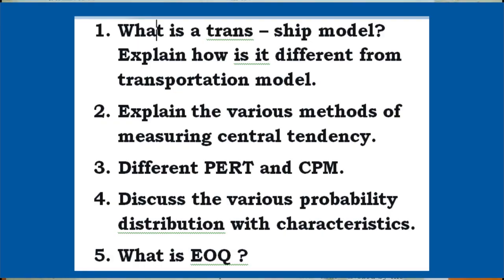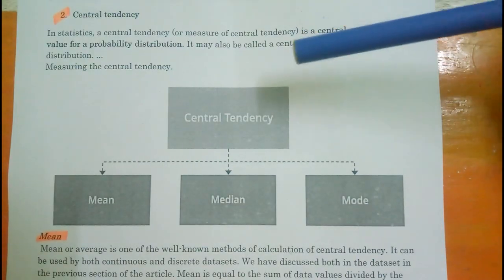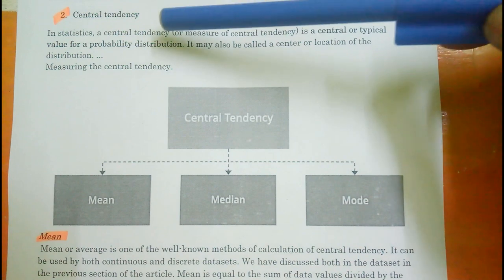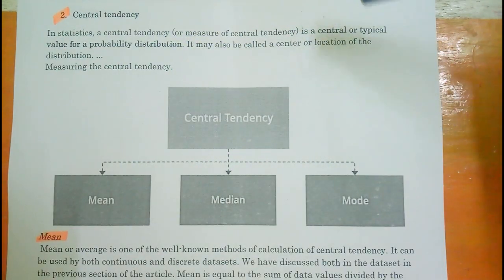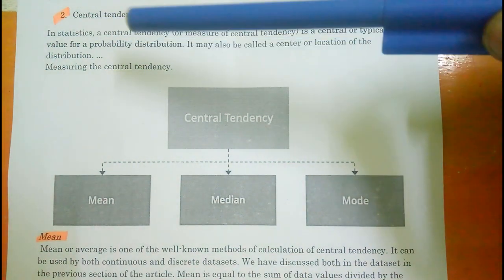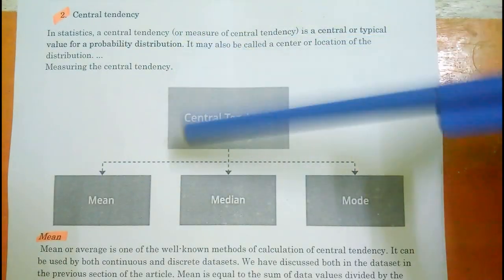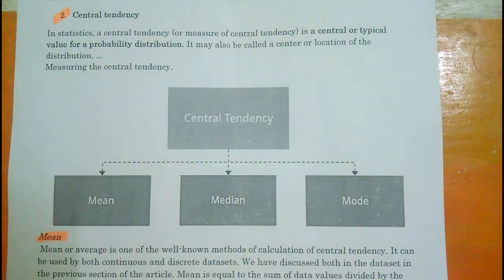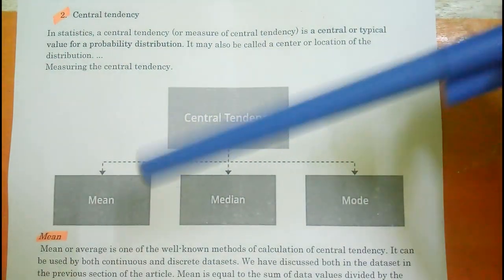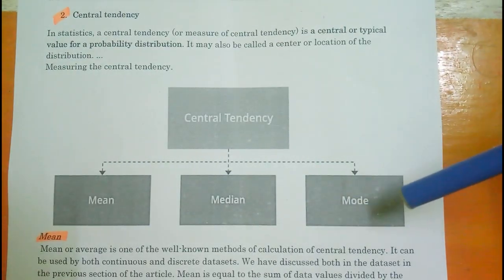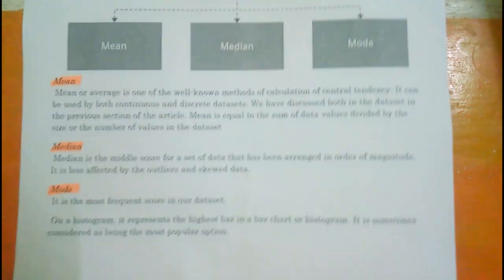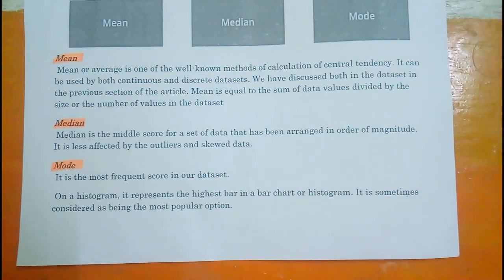Question 2: Explain the various methods of measuring Central Tendency. In statistics, Central Tendency is a central or typical value of a probability distribution. The three methods for measuring Central Tendency are Mean, Median, and Mode. I have also given explanations for each of these three methods.